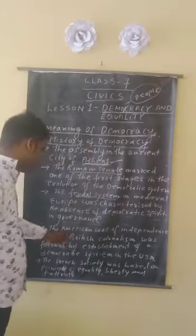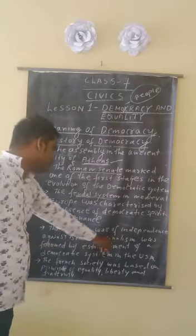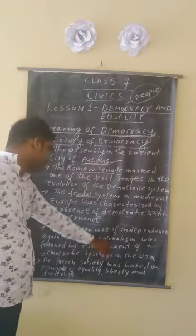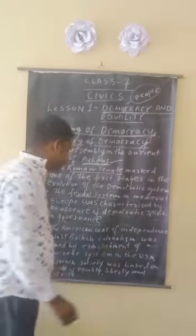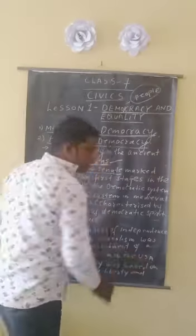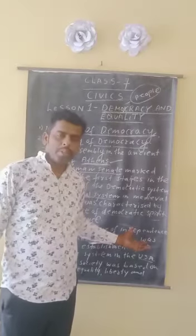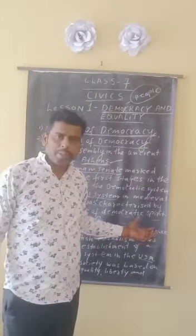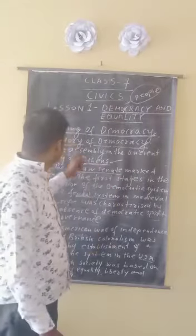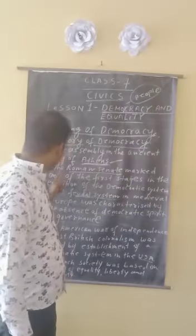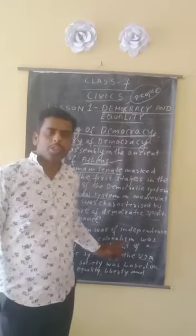Fourth, the American War of Independence against British colonialism was followed by the establishment of the democratic system in the USA. The USA was also under British rule, and after gaining independence, they chose the democratic form of government, highlighting that it is the most suitable form of government in the world.